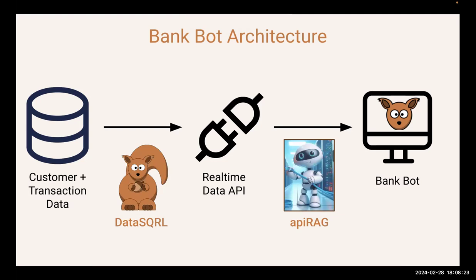The second tool is called API RAG. For those of you familiar with AI, you might have heard of RAG — it's an acronym that stands for Retrieval Augmented Generation. It's basically a fancy way of saying, how do we tell the chatbot about additional information that it needs in order to answer a customer's question? There's this whole LLM phenomenon going on where we figured out how to build very large language models capable of understanding human language.